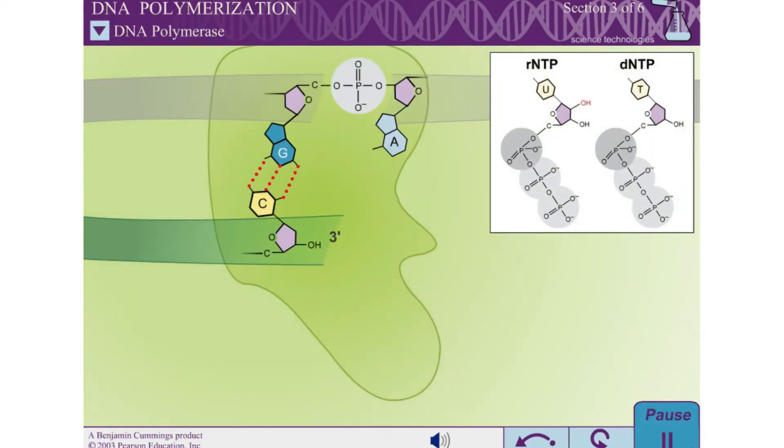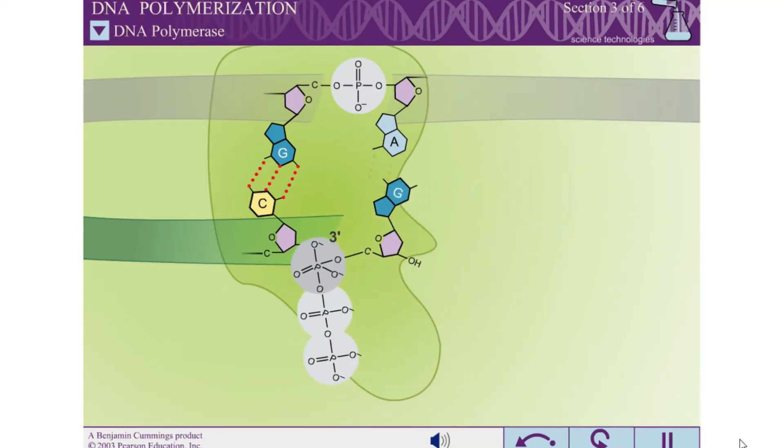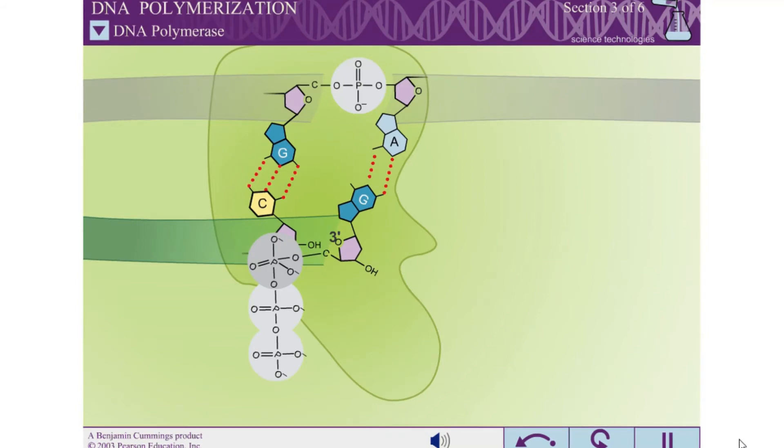Correct base pairing is also required for catalysis. If an incorrect base pair forms, the alpha-phosphoro group of the DNTP cannot properly align with the 3 prime hydroxyl of the primer strand. Once the proper DNTP is bound in the pocket, the reaction can continue.